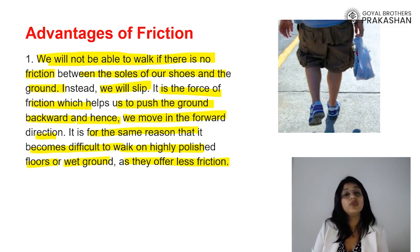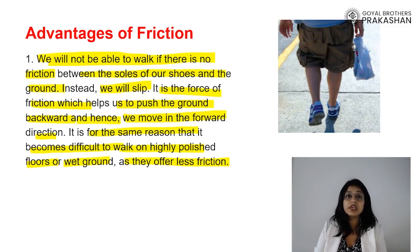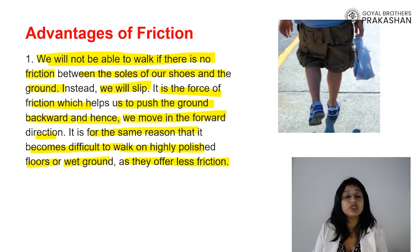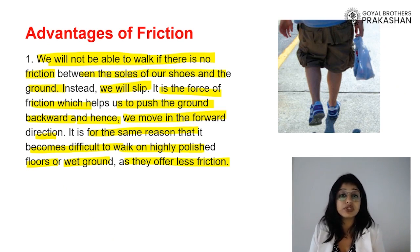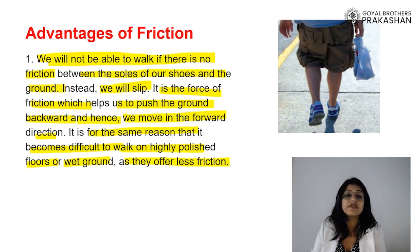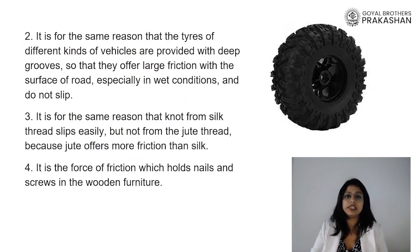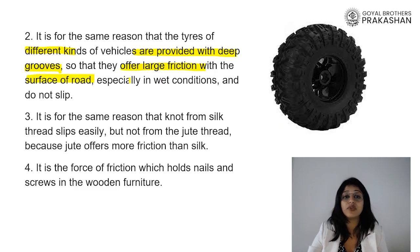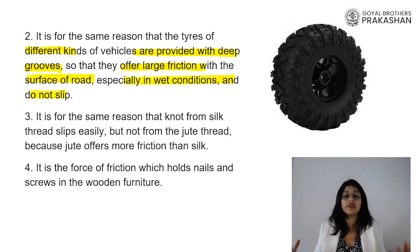Walking on ice with regular shoes is very difficult — you keep slipping. Our shoes are corrugated and have different structures on the sole specifically to increase friction, making it easier to walk. Similarly, tires of different vehicles are provided with deep grooves so they offer large friction with the road surface. In wet conditions where there is less friction, the grooves help them grip the ground and not slip, preventing accidents.